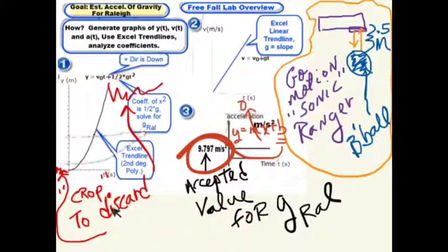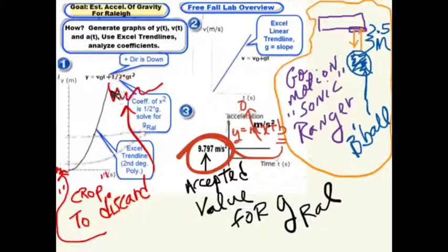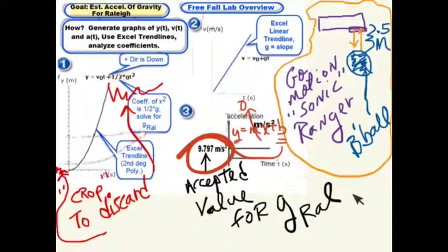When you drop the basketball, the time before you drop it is not free fall. Free fall is vertical motion where the only force is gravitational force. While your hand is holding the ball, that's not free fall. After the ball is dropped, it is free fall until it hits the floor. Data after it hits the floor also needs to be discarded because it's not part of the free fall problem. You're looking for this part of a parabola.